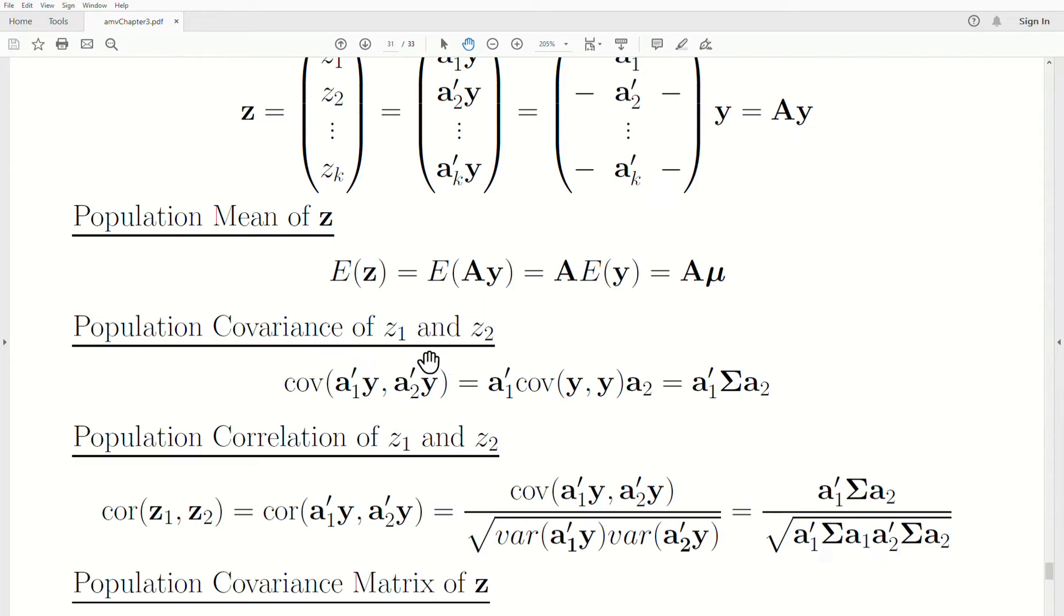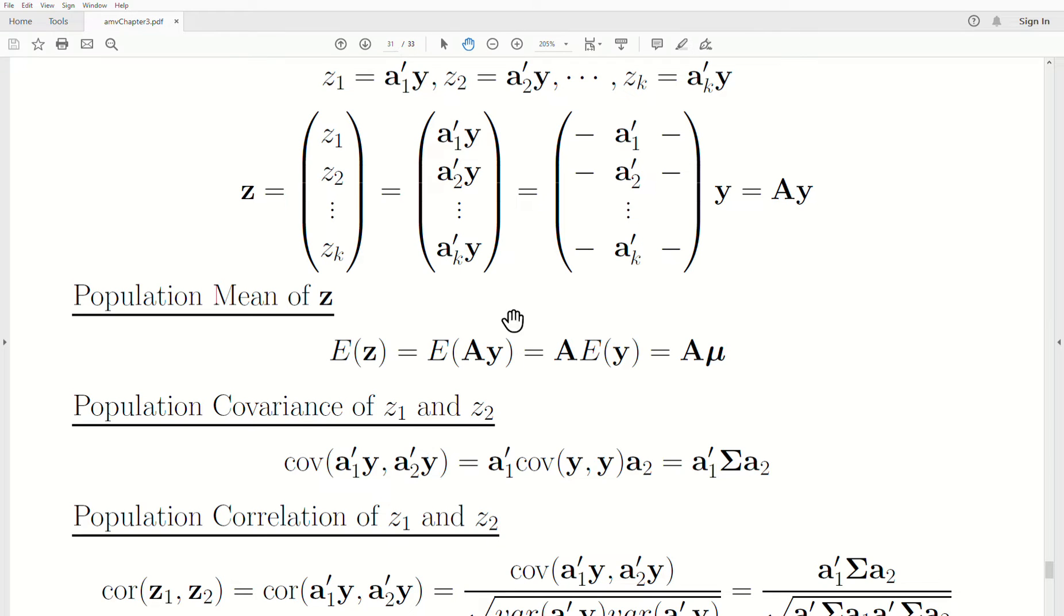Now the population covariance between two of these z variables, I'm going to generically call it z1 and z2. The covariance between these, we replace what z1 and z2 are. The constants come out of covariance. So it comes out left as is, and then it's transposed out back. So it's A2 transpose transpose, which is just A2. The covariance of y is just the sigma, the variance-covariance matrix.